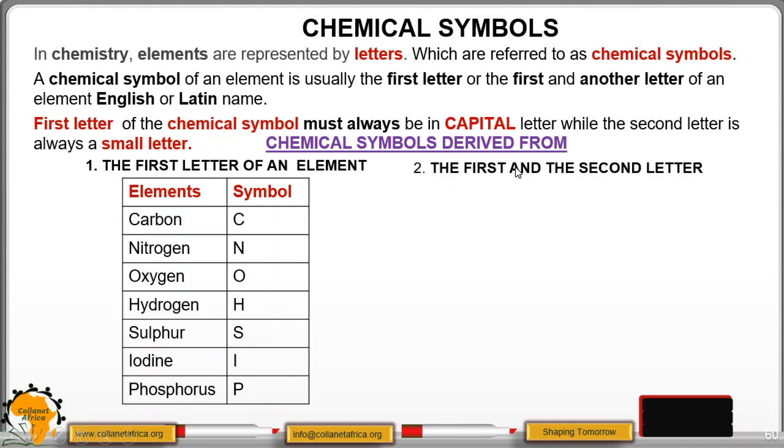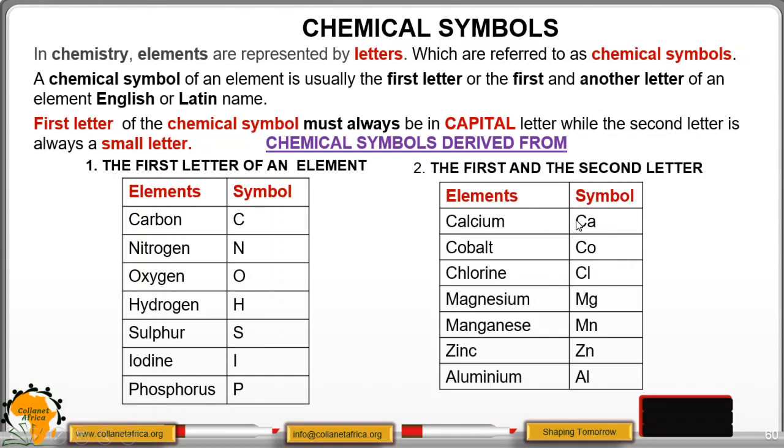Chemical symbols with first and second letter: calcium, Ca; cobalt, Co; chlorine, Cl; magnesium, Mg; manganese, Mn; zinc, Zn; aluminium, Al.